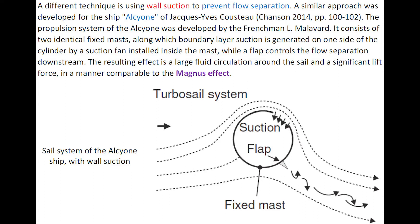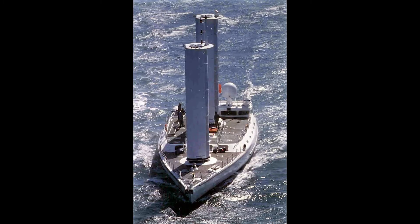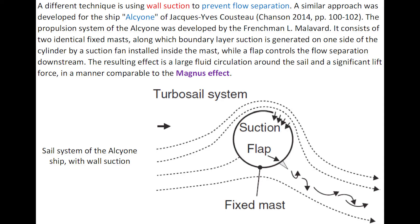A different technique is using wall suction to prevent flow separation. A similar approach was developed for the ship Alcyone of Jacques-Yves Cousteau, with a sketch here, leading to a significant lift force in a manner comparable to the Magnus effect.